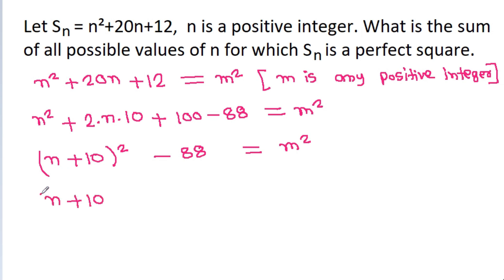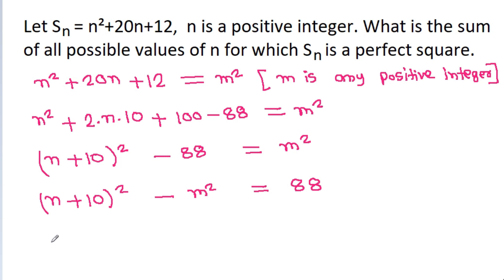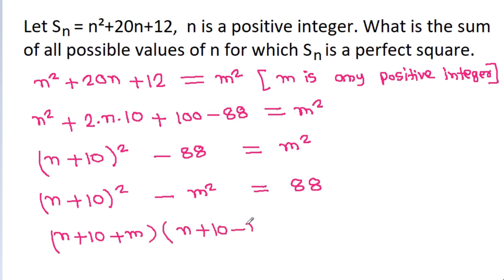That means n plus 10, all squared, minus 88 equals m squared. Rearranging, we get n plus 10 all squared minus m squared equals 88. Using the identity a squared minus b squared equals a plus b times a minus b, this becomes n plus 10 plus m times n plus 10 minus m equals 88.